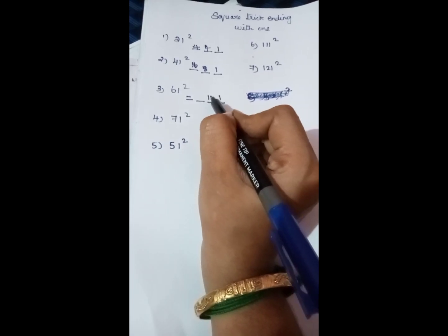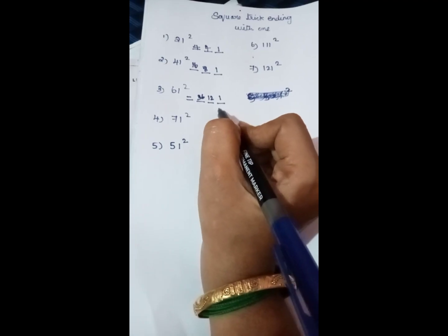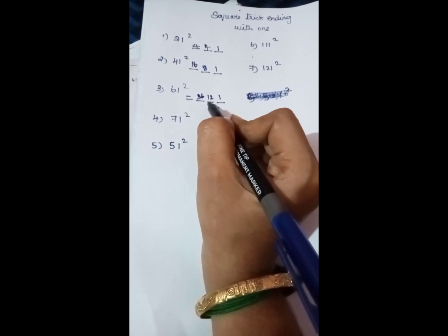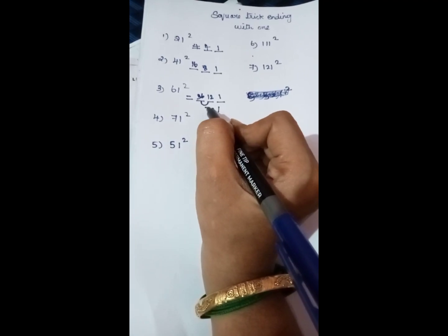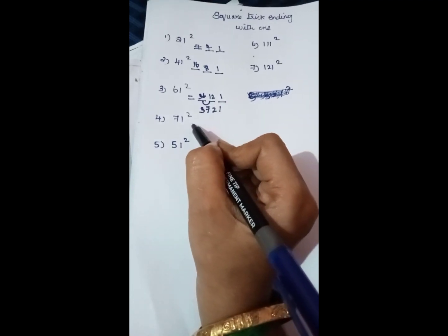Then 12. Square the 6, which is 36. Do the chain addition: 1, 2, 1+6=7, and 3, so 3721. Next, 71 square.